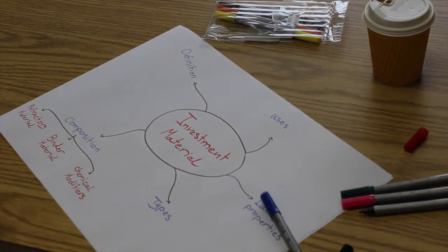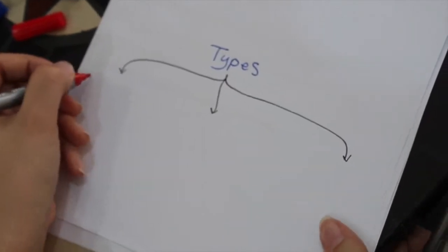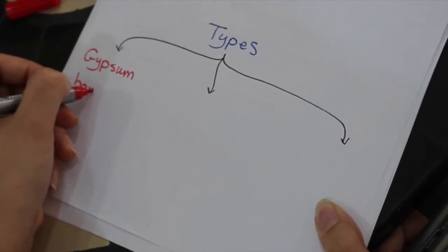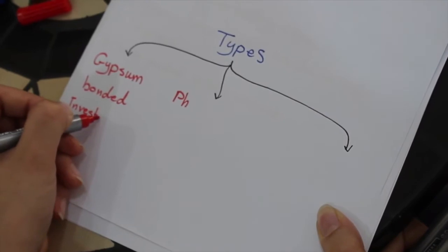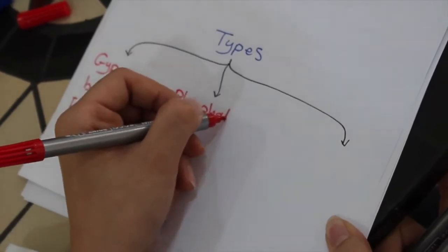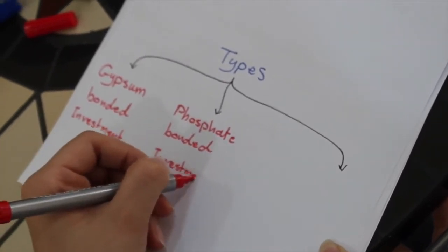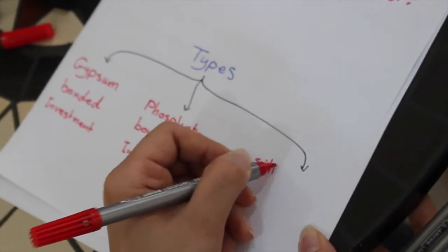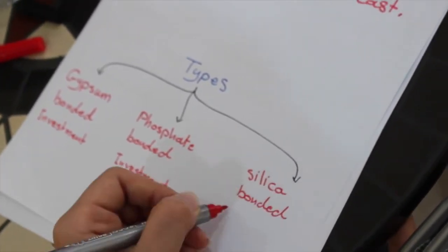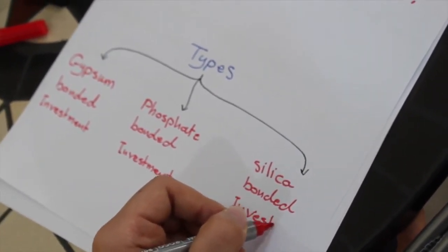There are three types of investment material. One: gypsum bonded investment, used for conventional casting of inlays, onlays, crowns and partial dentures made of gold alloy; they can withstand high temperature. Two: phosphate bonded investment, used primarily for alloys cast at higher temperatures than gold based alloys. Three: silica bonded investment, an alternative to phosphate bonded investment for high-temperature casting, principally used in casting of base metal alloy partial dentures.